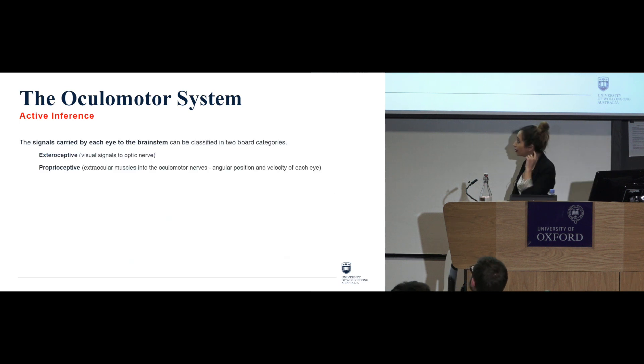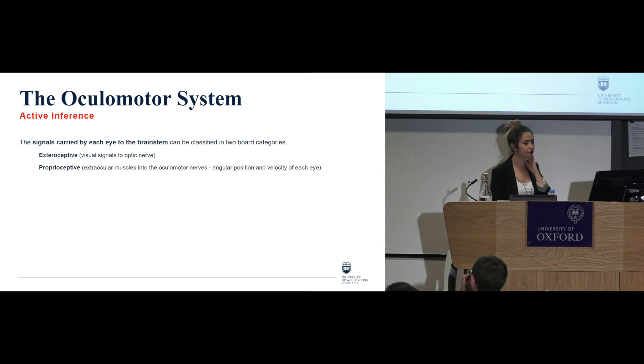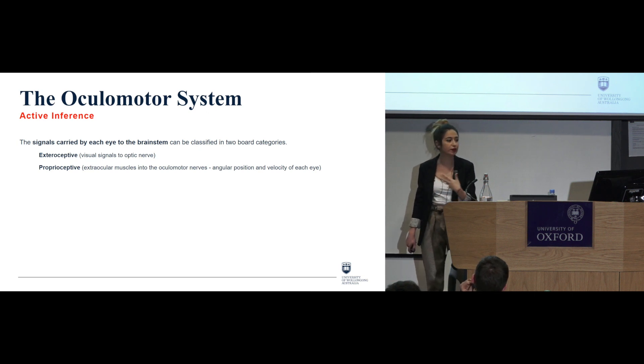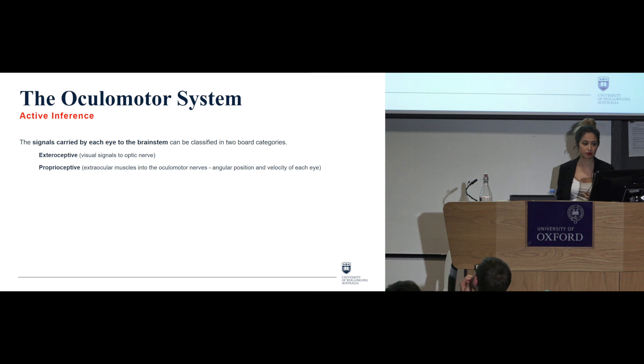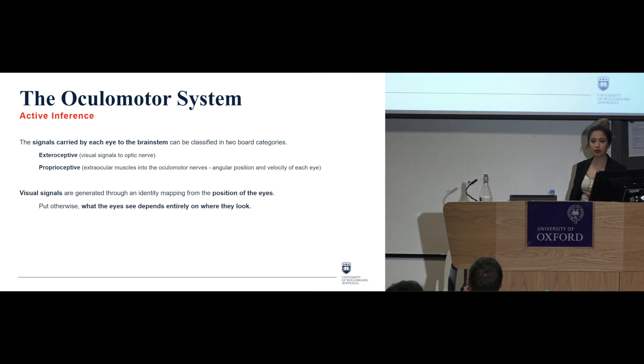Okay, so this is the main point. It's just that there are these signals that are carried by each eye to the brain stem, and they can be classified into broad categories. And this is what the main point that I want to stress out here. That's the exteroceptive and the proprioceptive. So on the exteroceptive, as we all know, we have the visual signals to the optic nerve, and then on the proprioceptive level, there is this extra ocular muscles into the oculomotor nerves, which control the angular position and velocity of each eye. Okay, so in other terms, visual signals are then generated through an identity mapping from the position of the eyes.